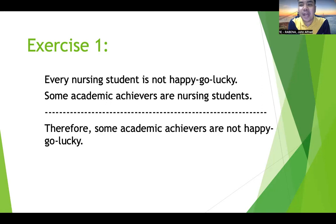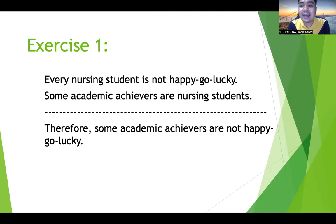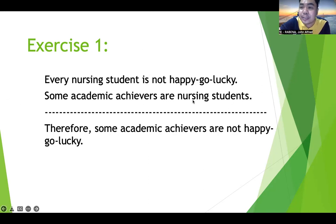What is the major term? The major term is found in the major proposition — the upper proposition. Therefore, the major term is happy-go-lucky, because it is the term found in the major proposition other than the middle term. What is the minor term? The minor term is academic achievers, because it is the term found in the minor proposition — the second proposition — other than the middle term. So: middle term is nursing student, major term is happy-go-lucky, minor term is academic achiever.